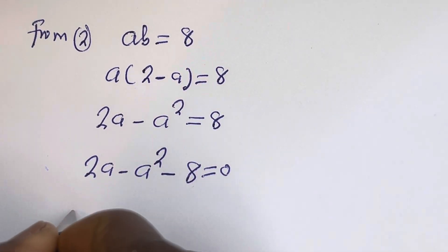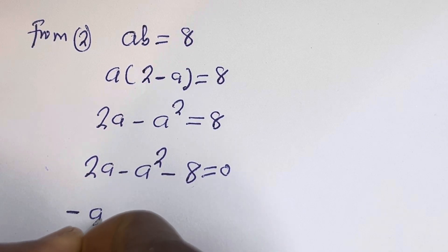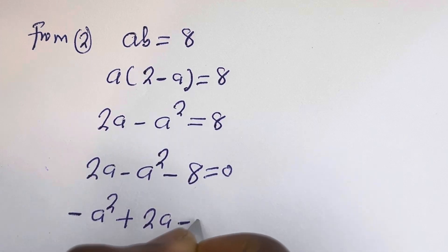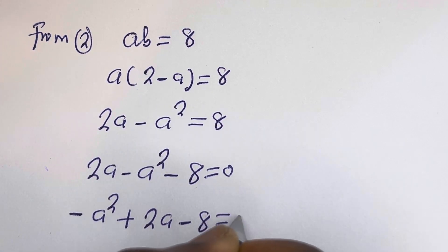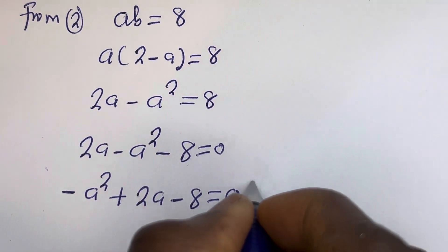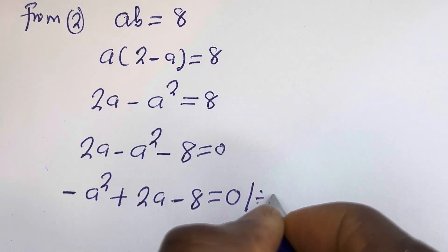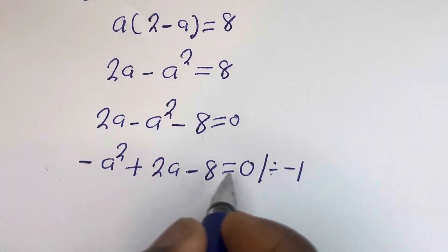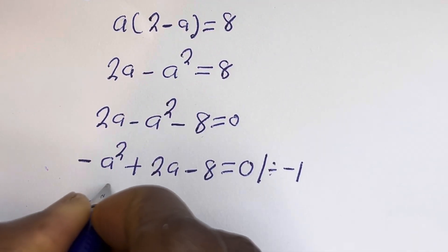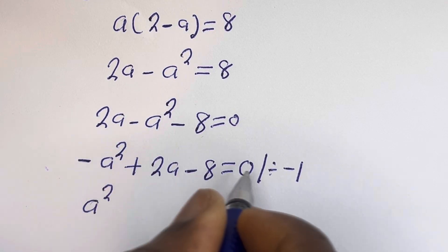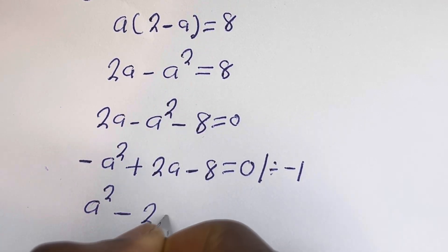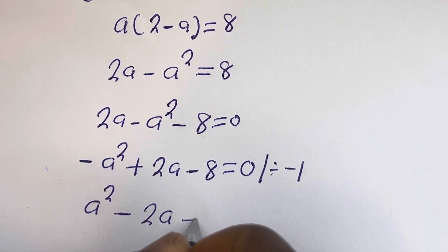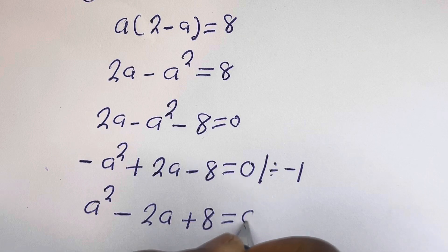This gives us 2a minus a squared minus 8 is equal to 0. Now let's put this in standard form: minus a squared plus 2a minus 8 is equal to 0. Now let's divide all through by minus 1: minus a squared divided by minus 1 is a squared, plus 2a divided by minus 1 is minus 2a, then minus 8 divided by minus 1 is plus 8, is equal to 0.